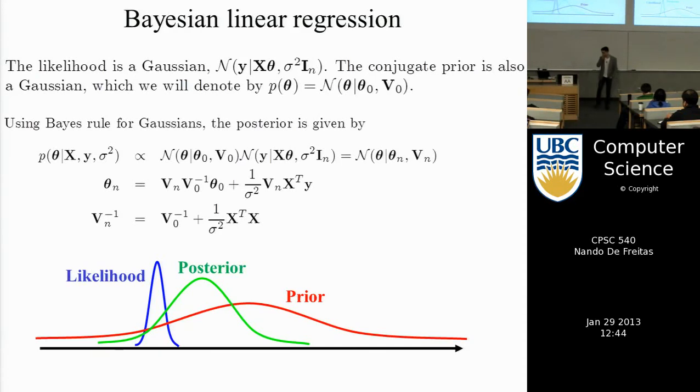Today's lecture. In the last lecture and in your homework, you essentially learned that if you have a Gaussian prior and you multiply times a Gaussian likelihood and normalize, you get a Gaussian posterior.